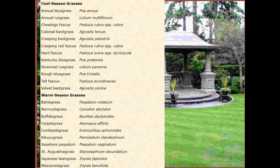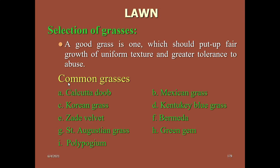Warm season grasses — these species cannot withstand frost or low temperature. They are mainly recommended for tropical or subtropical regions and are mainly used in the Indian subcontinent. Examples include Bermuda grass, buffalo grass, carpet grass, centipede grass, and St. Augustine grass — St. Augustine is also highly shade tolerant. Common grasses used in India include Calcutta dub grass, Korean grass, Zoysia velvet grass, St. Augustine grass, Mexican grass, Kentucky bluegrass, Bermuda grass, and green gem.